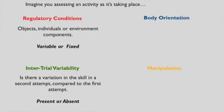With intertrial variability, this is essentially referring to whether or not things change from one attempt to the next. We can ask the question: is there a variation in the skill in a second attempt compared to the first attempt? If there is no variation between the first try and the second, we would say that intertrial variability is absent. If there is a change between one attempt and the one that comes right after, then we would say intertrial variability is present.